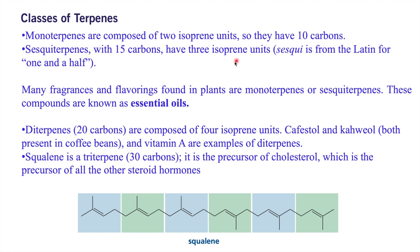Monoterpenes are combinations of two isoprene units containing 10 carbons. Sesquiterpenes contain 15 carbons, meaning three isoprene units. Many fragrance and flavoring compounds from plants contain monoterpenes or sesquiterpenes — these are called essential oils. Diterpenes contain 20 carbons and are present in cafestol, caviole, and vitamin A. Squalene is a triterpene containing 30 carbons and is the precursor of cholesterol.